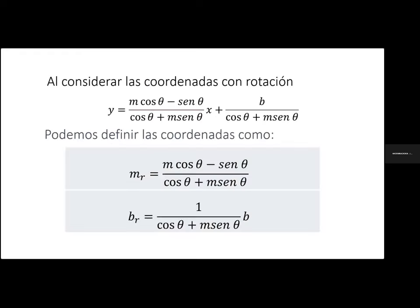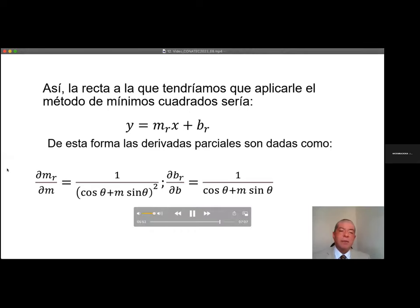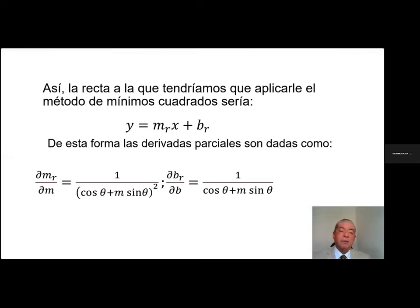De esta forma, al igual que para el caso horizontal, mediante el uso del método de mínimos cuadrados, vamos a obtener una ecuación que es la que nos va a dar los resultados para el caso lineal. Las nuevas variables MR y BR están definidas en función de las tradicionales B para la ordenada y la pendiente que tenemos en una línea recta. Con la obtención de estas nuevas variables, podemos aplicar el método de mínimos cuadrados para generar ecuaciones tanto para la variabilidad en la ordenada como en la pendiente.